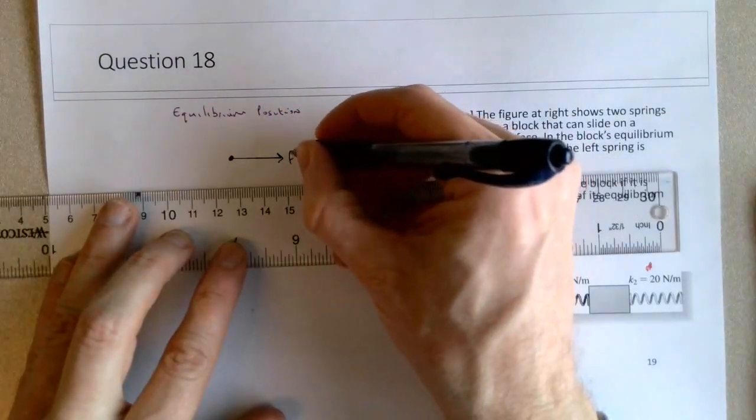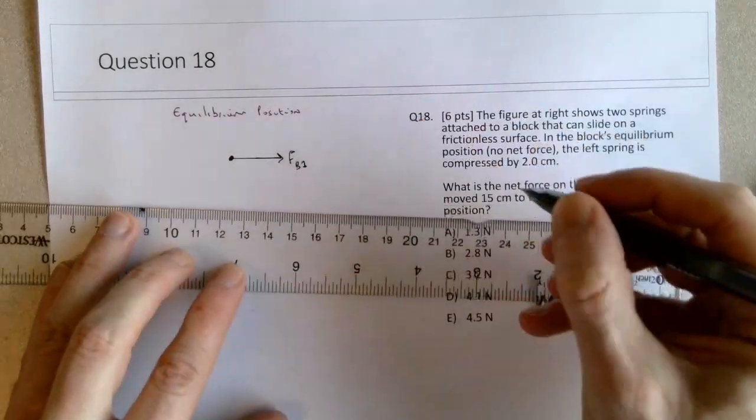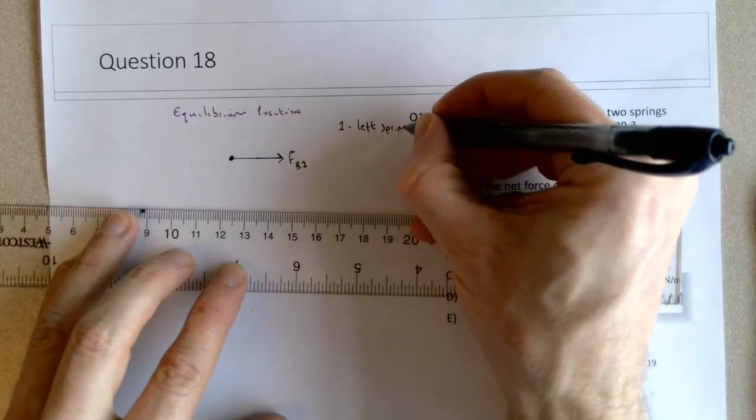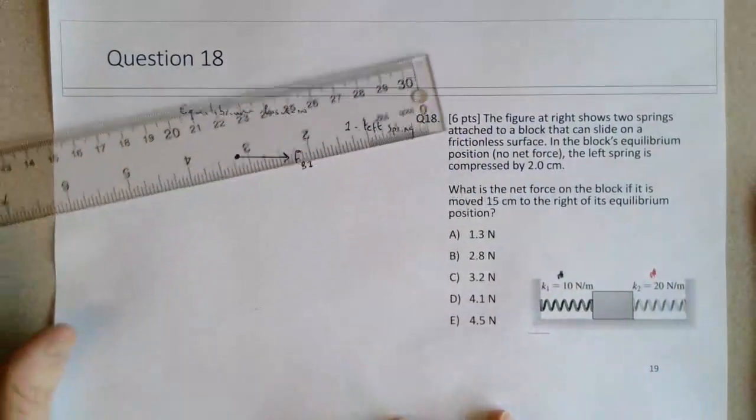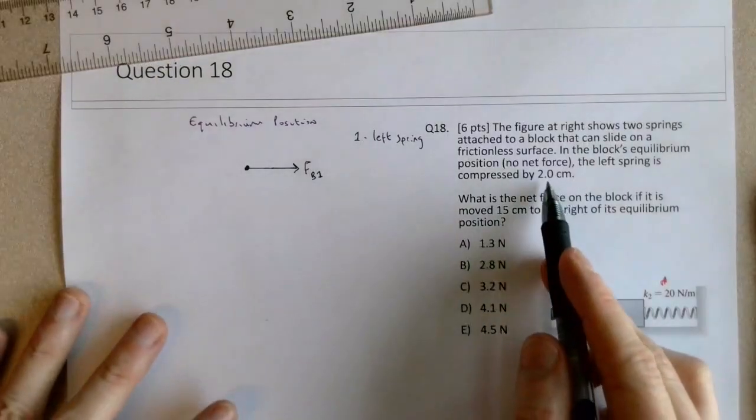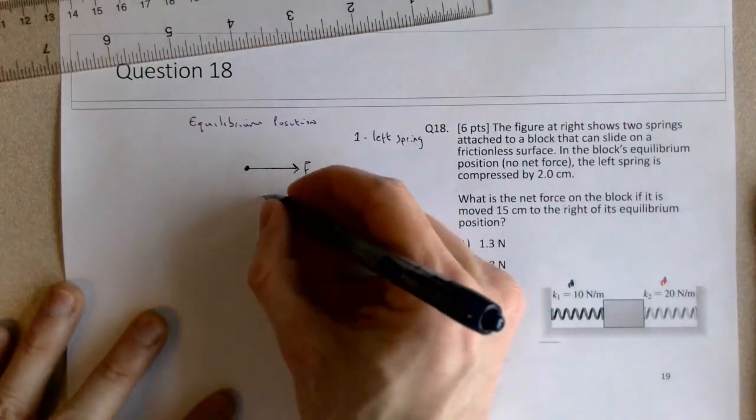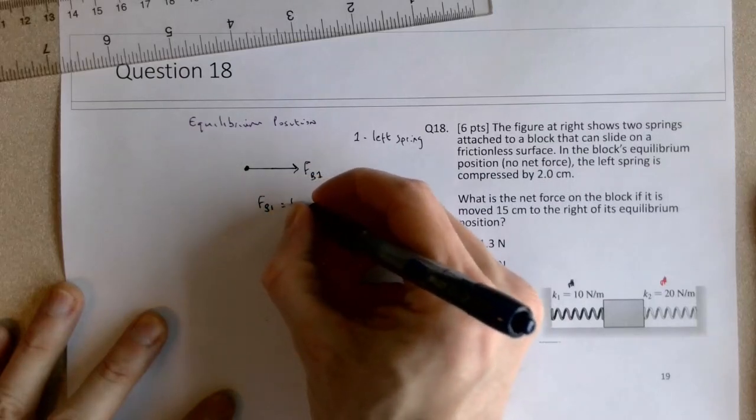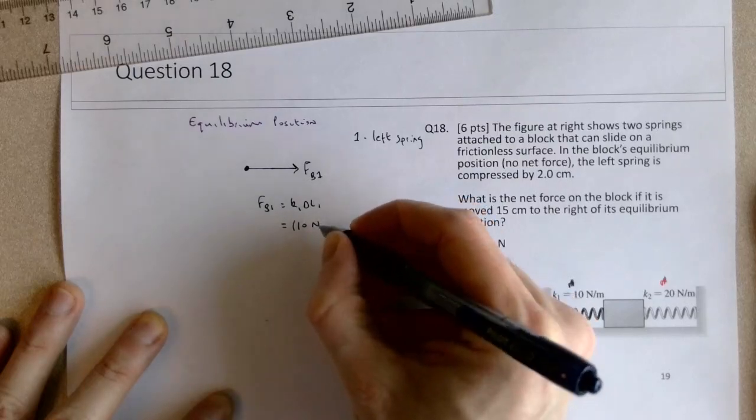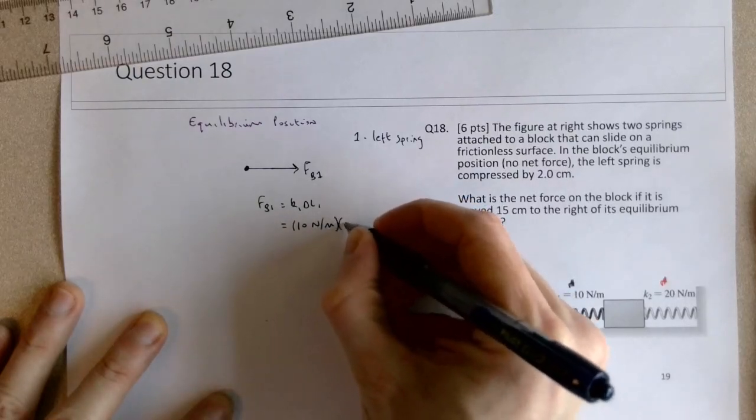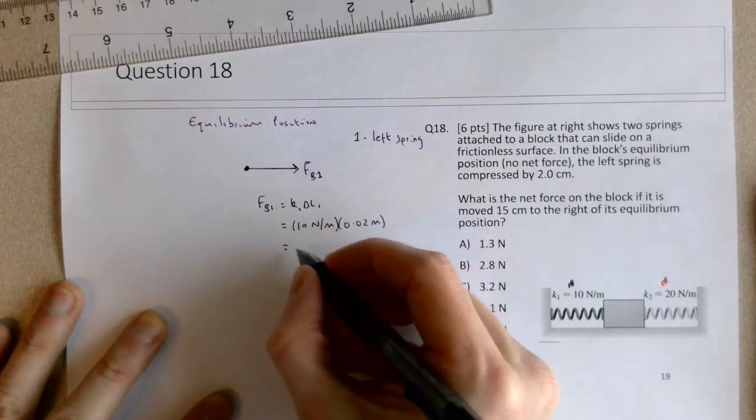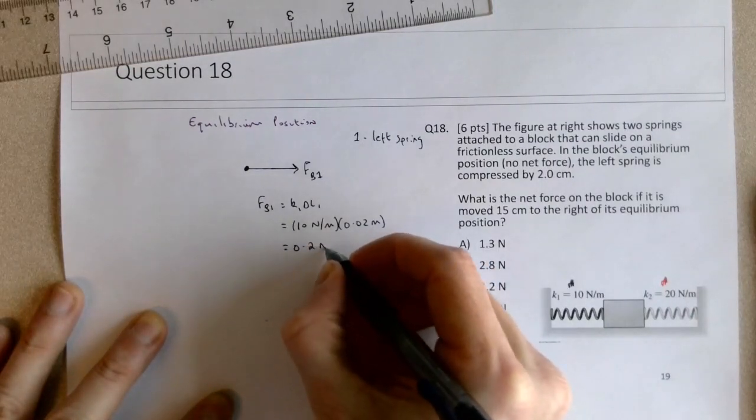This is the force on the block by spring 1, where 1 is the left spring. And we can find the magnitude of that force because we have the spring constant and we have the change in the spring's length. So Fb1 is going to be K1 times deltaL1, so that's 10 newtons per meter times 2 centimeters, but converting to meters 0.02, that's 0.2 newtons.